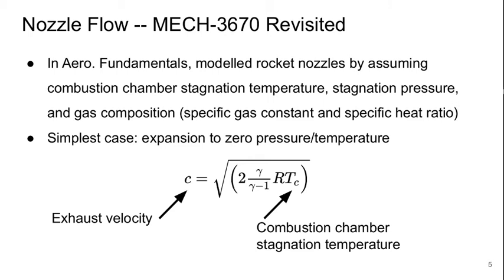We did talk about this a little bit in Aerospace Engineering Fundamentals, but we'll revisit it here. In that course, we modeled rocket nozzles by assuming the combustion stagnation pressure, stagnation temperature, and gas composition, which basically meant the specific gas constant and the specific heat ratio.